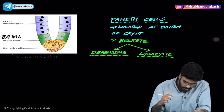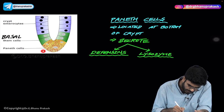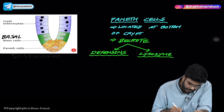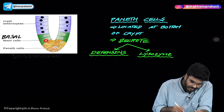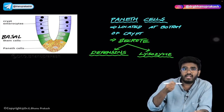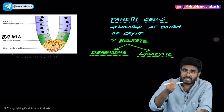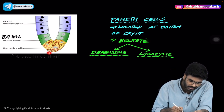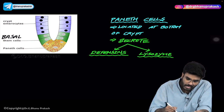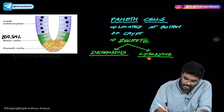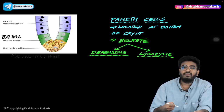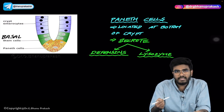Some important points about Paneth cells: they are present in the bottom of the crypts of Lieberkühn. In the intestine there are these intestinal crypts, and in the bottommost part of those crypts, Paneth cells are secreting molecules like defensins and lysozyme which are antibacterial in nature.